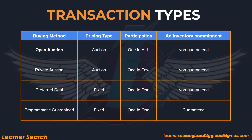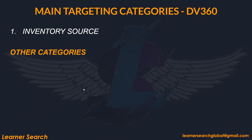Programmatically, DSPs purchase inventory from exchanges through various buying methods: Open Auction, Private, Preferred Deal, and Programmatic Guaranteed. I have explained all these transaction types in detail in my previous videos. In inventory source, with the help of ad exchanges and various buying methods, advertisers or inventory buyers, with the help of DSPs, fulfill their requirements.